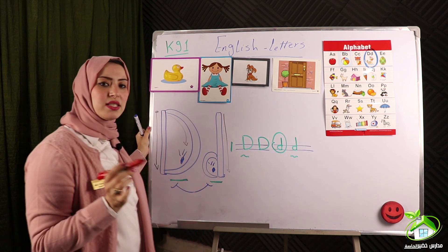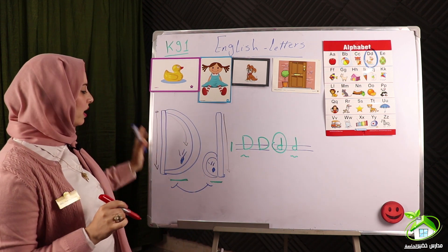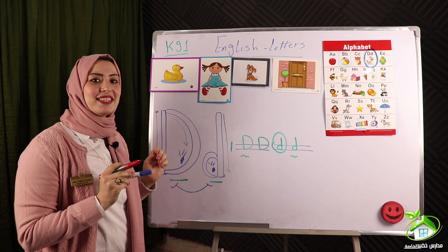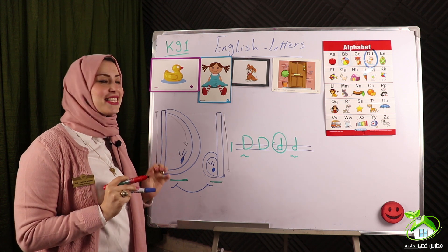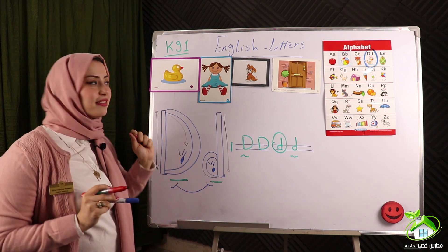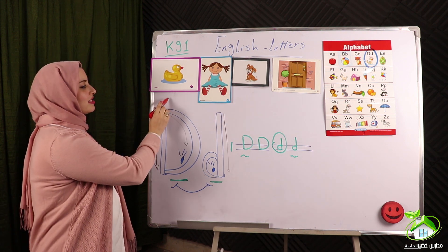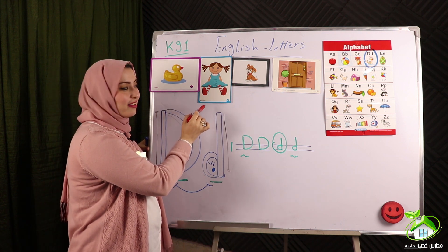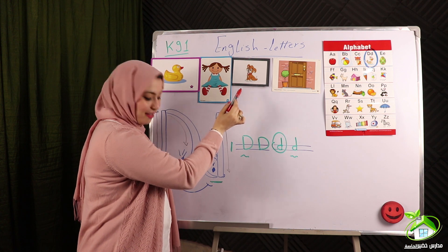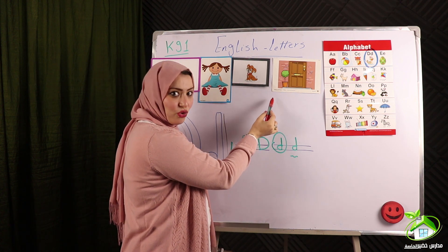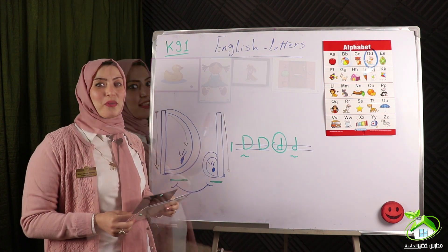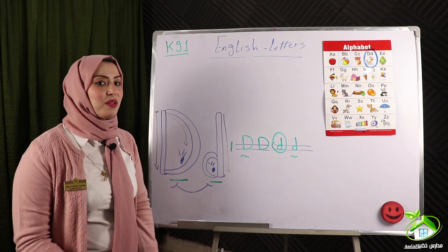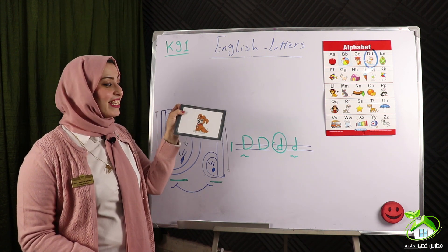Let's revise one more time. Letter D — D makes what sound? Yes, da, da, da. Excellent! KG, D is for what? Look at the board — duck, doll, dog, door. Excellent KG!